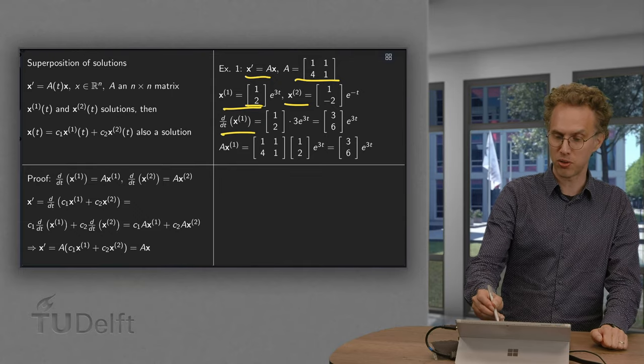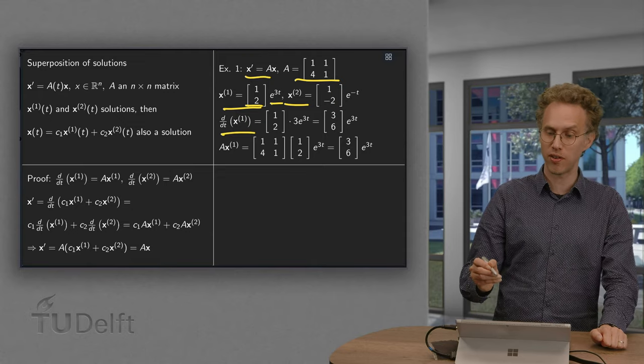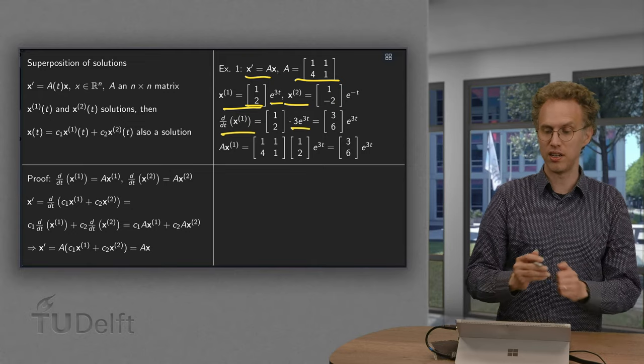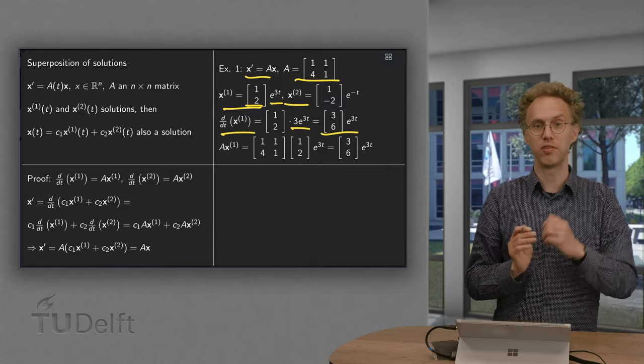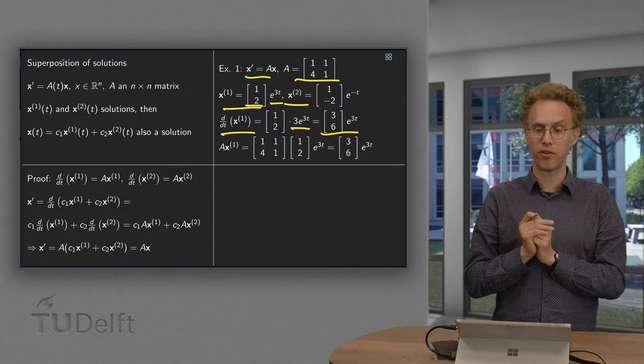x1 prime, the vector is a constant while we differentiate e to the power 3t. Derivative equals 3 times e to the power 3t. So x1 prime equals 3, 6 times e to the power 3t.